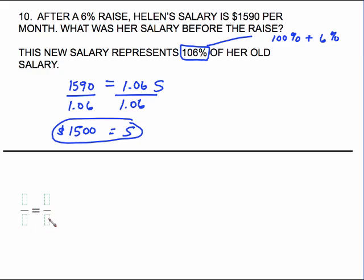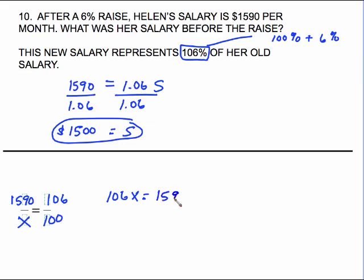For the proportion setup: the 100% salary is her old salary — that's X. The 106%, which is the new percent, correlates to the new amount she's making, $1,590. Cross-multiply: 106X equals 1,590 times 100. Divide both sides by 106, and it's the same arithmetic — just without the decimal points — and it is still $1,500.